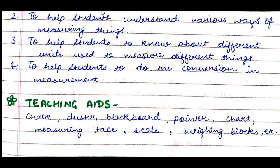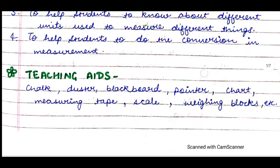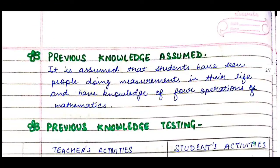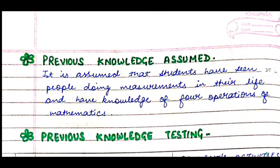We need chalk, duster, blackboard, pointer, chart, measuring tape, scale, weighing blocks, etc. — all materials needed in a measurement chapter. Show them so that the class becomes interactive and more interesting. Children find it more interesting to see real-life objects when the teacher brings them into the classroom for a specific topic. After that, we write previous knowledge assumed: it is assumed that students have seen people doing measurements in their life and have knowledge of the four operations of mathematics.